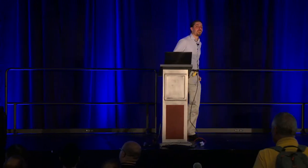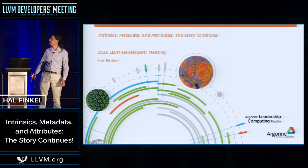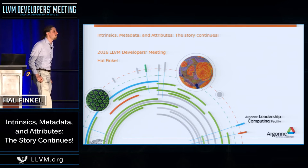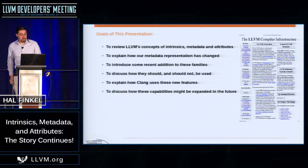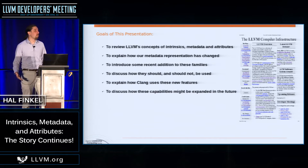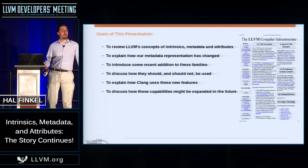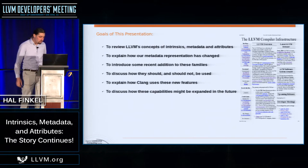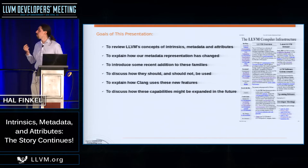This is not a deep talk — it's a broad talk. It's supposed to be a lightning review and overview of where we stand in terms of intrinsics, metadata, attributes, and a number of things that have been added over the past few years for a variety of different purposes. I'm going to start by giving an overview of what these things are, for those of you who aren't intimately familiar, and then we'll talk about incremental improvements and some new features, including some representational changes in metadata itself.